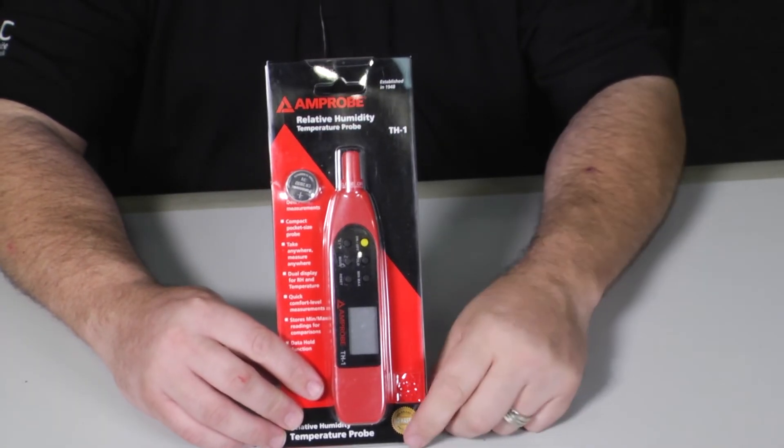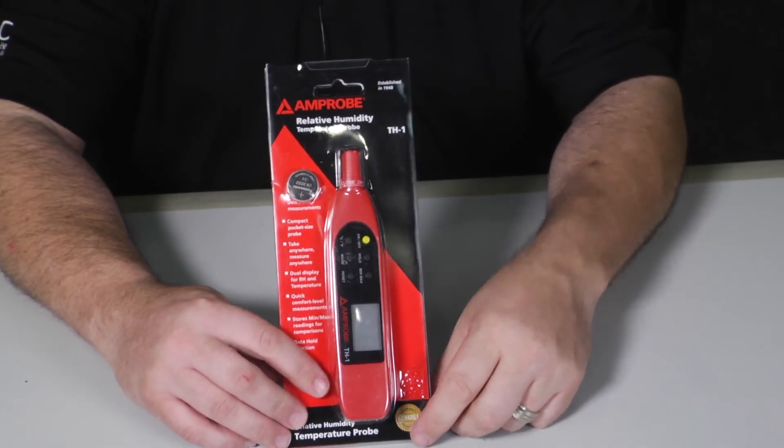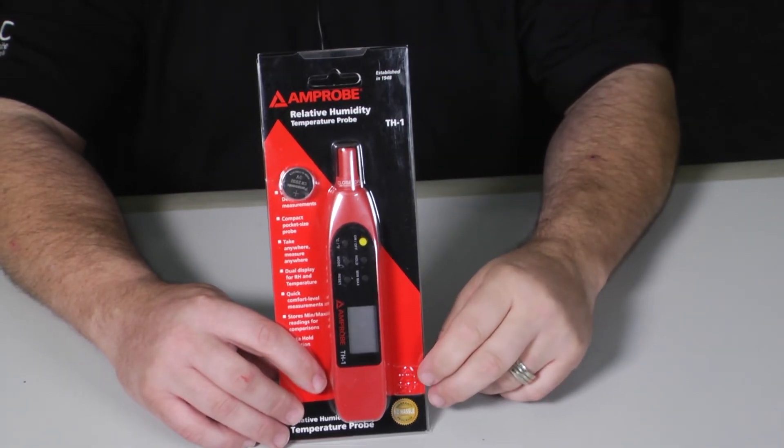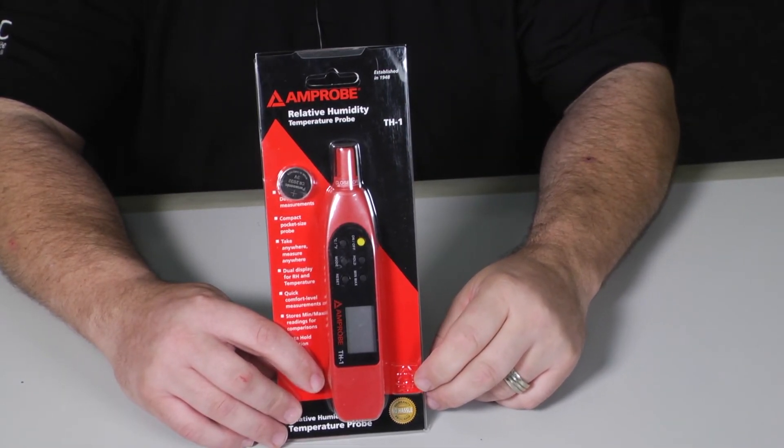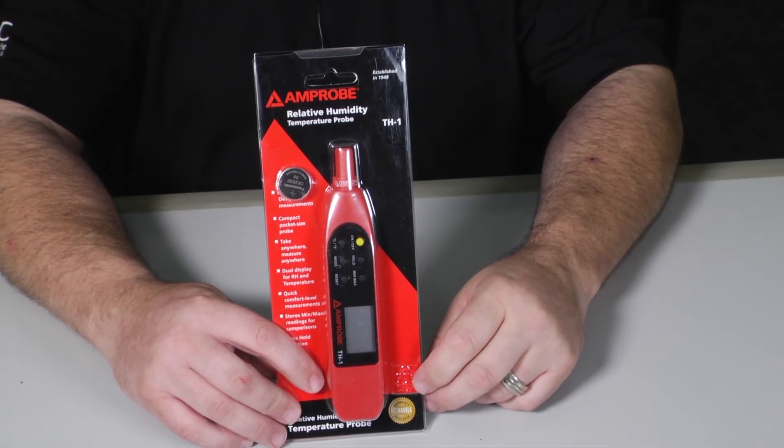Hi, this is Jose de la Portilla and welcome to Toolbox Tuesday. Today we're taking a look at the Amprobe TH1. It's labeled as a relative humidity temperature probe.